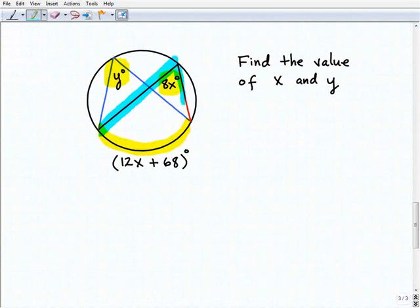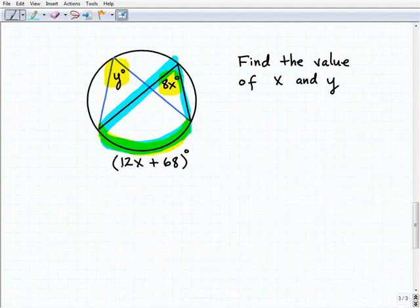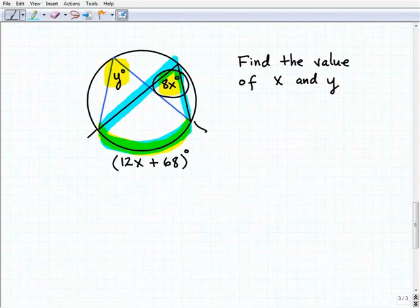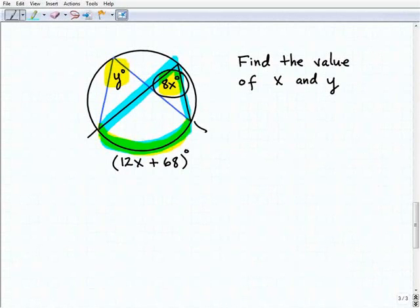I have an arc. The measure of this arc is 12x plus 68. That's this intercepted arc right here. Going back to that theorem we learned in the lesson, the measure of an inscribed angle is half the measure of its intercepted arc. So I'm going to focus on this particular angle right here because it has x in it. And this has x in it. So I can write an equation that has just the variable x. So 8x, that inscribed angle, is half the measure of the intercepted arc 12x plus 68.